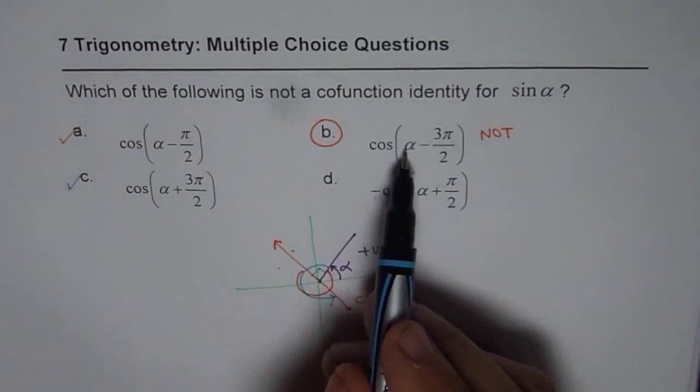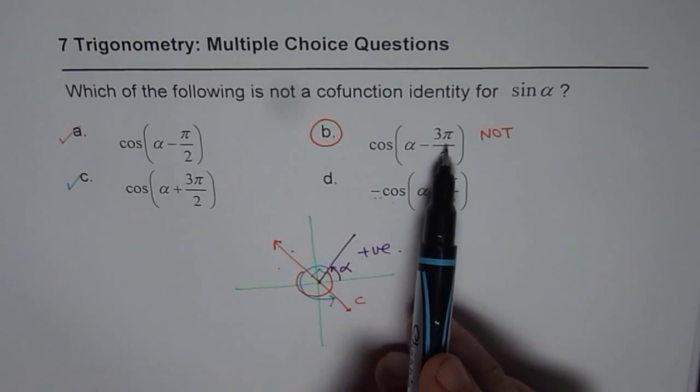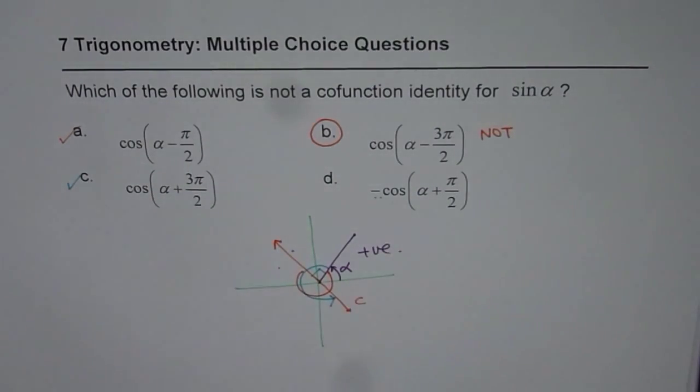So, the answer is cos(α - 3π/2). That is not a cofunction identity for sine alpha, but all of the three are. I hope that's clear. Thank you.